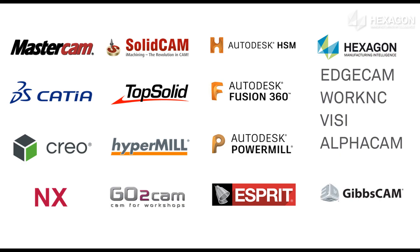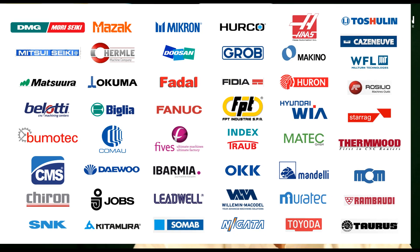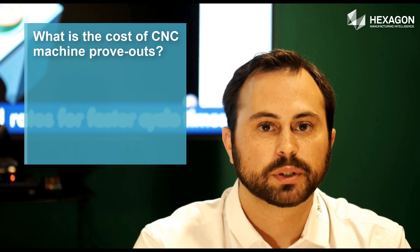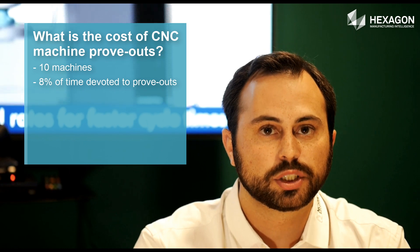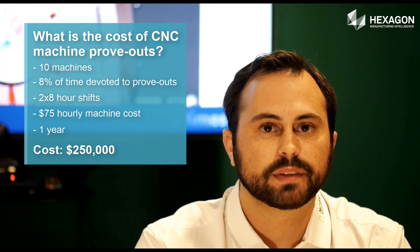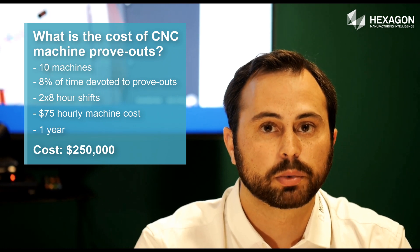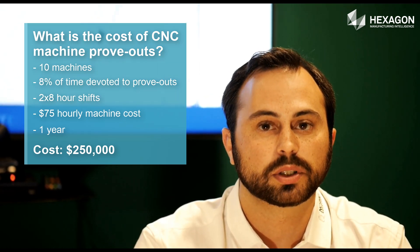NC Simul complements CAM systems, connecting to more than fifteen of them on the market, and will simulate any type of CNC machine. Proving out programs on the real machine represents a high cost for the shop floor. For example, if you do a simple calculation of return on investment for ten machines with eight percent of their time devoted to proving out programs in two eight-hour shifts of the day over the course of a year, it equates to a cost of two hundred and fifty thousand dollars. Therefore, proving out programs offline with NC Simul can facilitate an impactful annual cost reduction.